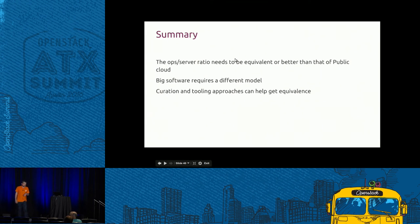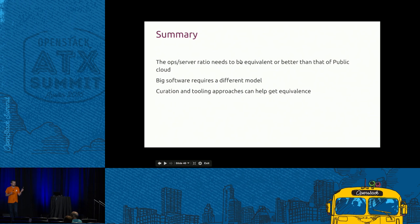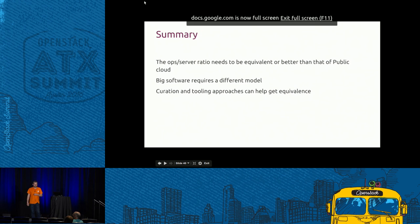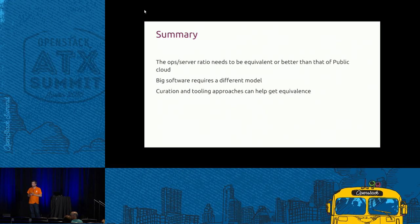To summarize: OpenStack can get closer to public cloud economics. It needs to compete on operating costs because workloads will go to the most cost-efficient places. To do that, we need to treat OpenStack like big software, which requires a different model. Tools from even five years ago for managing these big complex environments aren't going to work. Curation, tooling approaches, and managed services can help us get much closer to cost equivalence with public cloud.